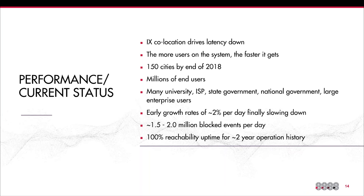Our current status: we are primarily located at internet exchange points worldwide — about 114 locations now — with a target of 150 by end of 2018, growing at about two locations per week. We have millions of end users, though the exact number is difficult to determine since single IP addresses can mask large numbers of users. Our early growth rate of about two percent per day is slowing down, which is good, and the system still shows exceptionally strong growth.